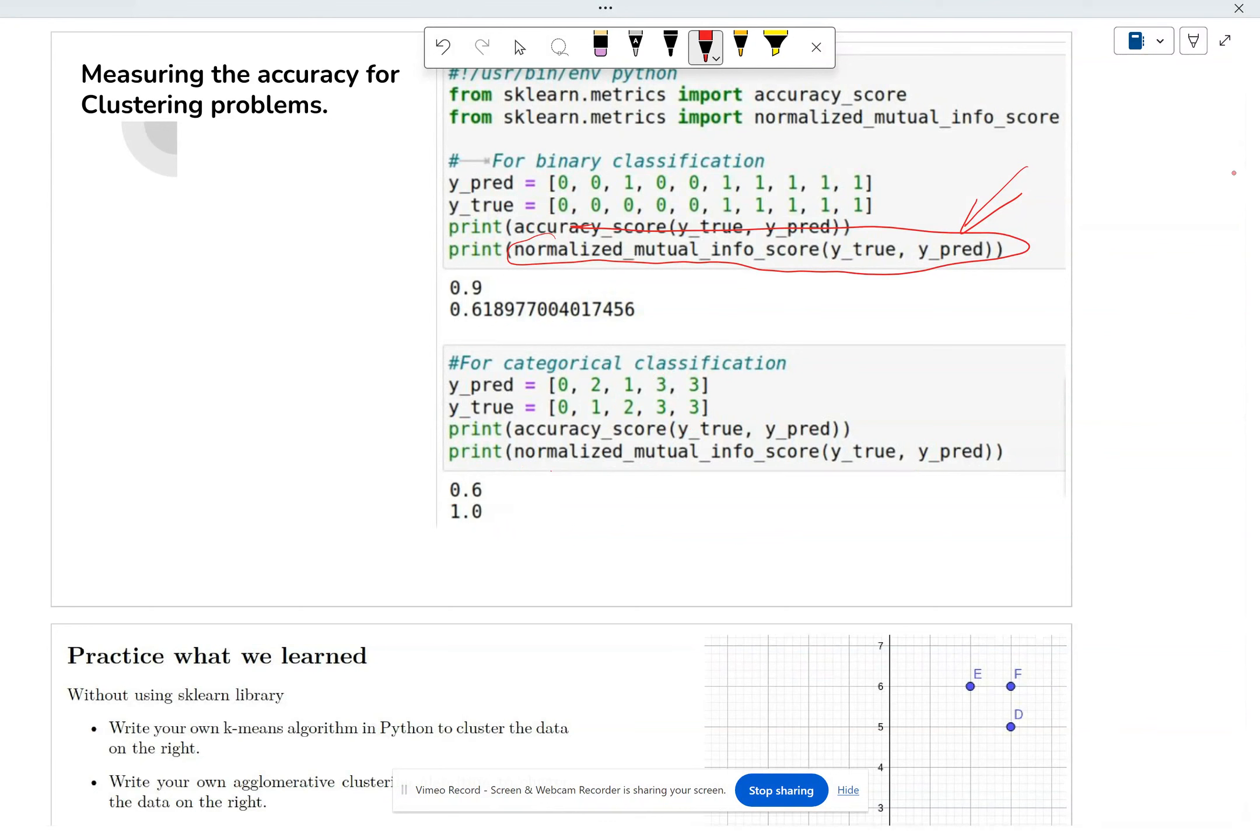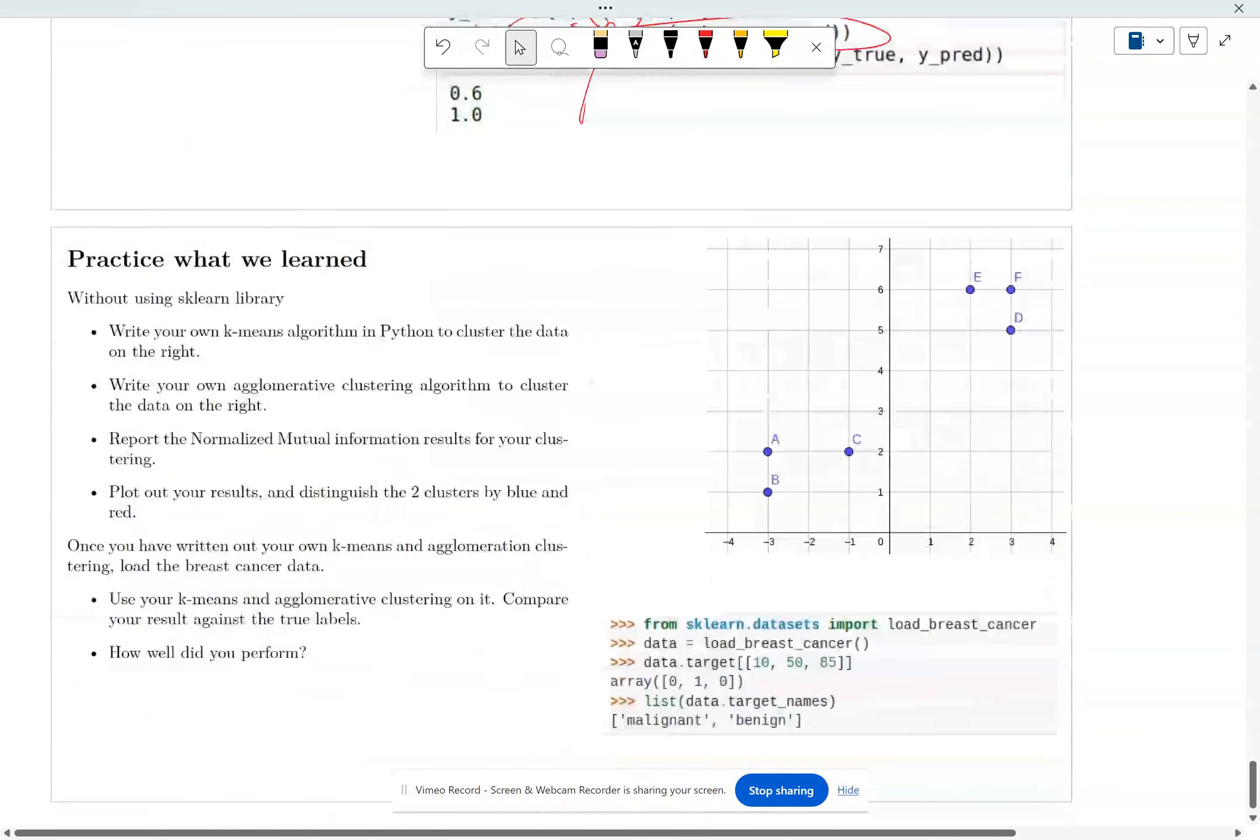Whereas, if you had used accuracy, you would have said 40 percent of it is wrong. So this is not true because you didn't really care in the first place that the label were flipped anyways.